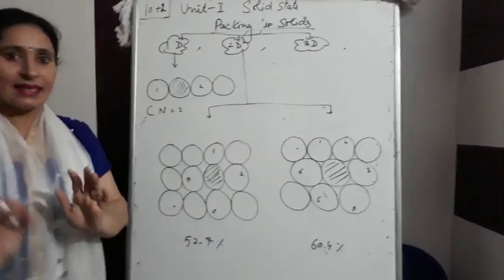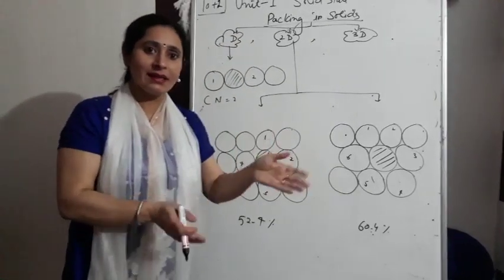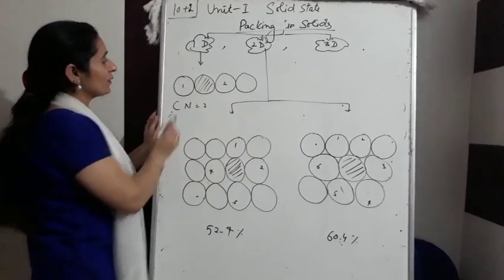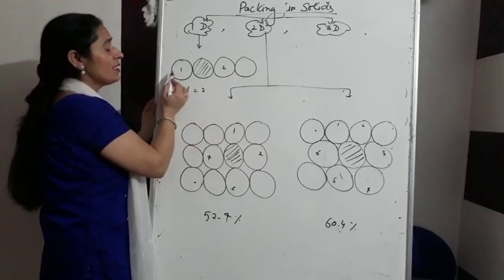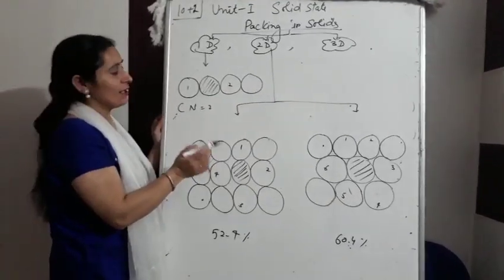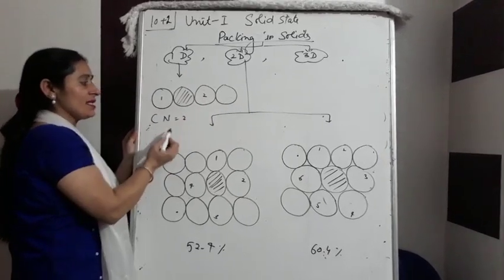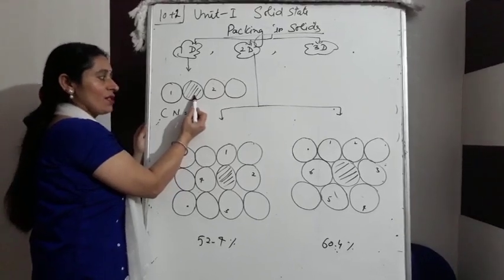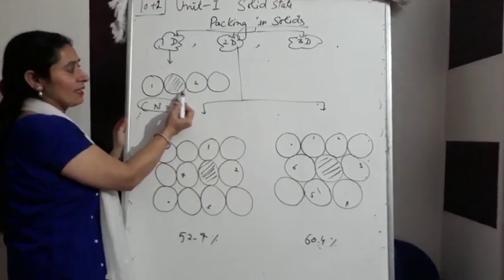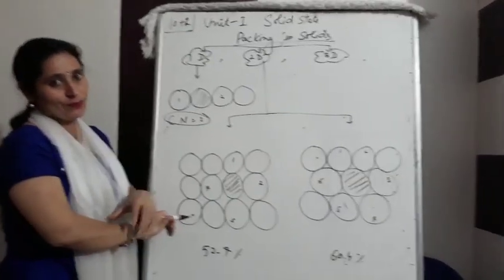In one dimension, the crystal grows only lengthwise — there is no width. The spheres are aligned one after another, like going to a morning assembly in a line. This is all in one line, so the coordination number — meaning how many nearby atoms a particular sphere can touch closely — is two, one on each side.